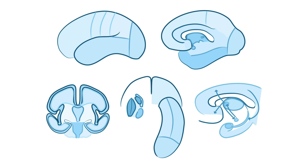Here we'll create a basic overview of the cerebrum, which includes such important structures as the cerebral hemispheres, brainstem, and cerebellum.